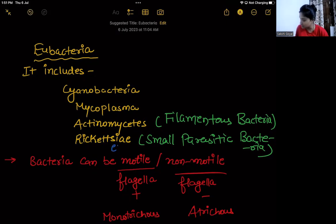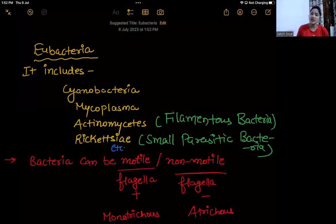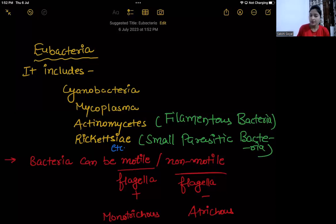Actinomycetes are filamentous bacteria — just learn that about them. Rickettsia are small parasitic bacteria — just learn that. For Actinomycetes, two examples you have already seen are Streptomyces and Frankia; that is enough.